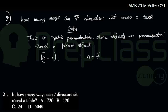So the number of ways that 7 directors can be permutated around the table will be (7-1) factorial, which is the same as 6 factorial.